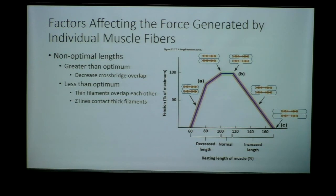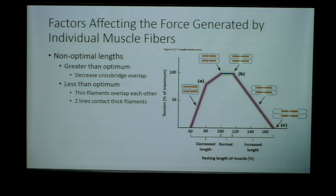Likewise, starting at a length greater than optimal means the sarcomere is very stretched out — again, not optimal for maximum actin-myosin interaction. We'd like to be right around the middle range, which is our optimal length. At this length, we generate the most amount of force in terms of percent of maximum force generation. This is where muscles like to be, which is why they are suspended in the body with a point of origin and insertion to keep them at that optimal length.